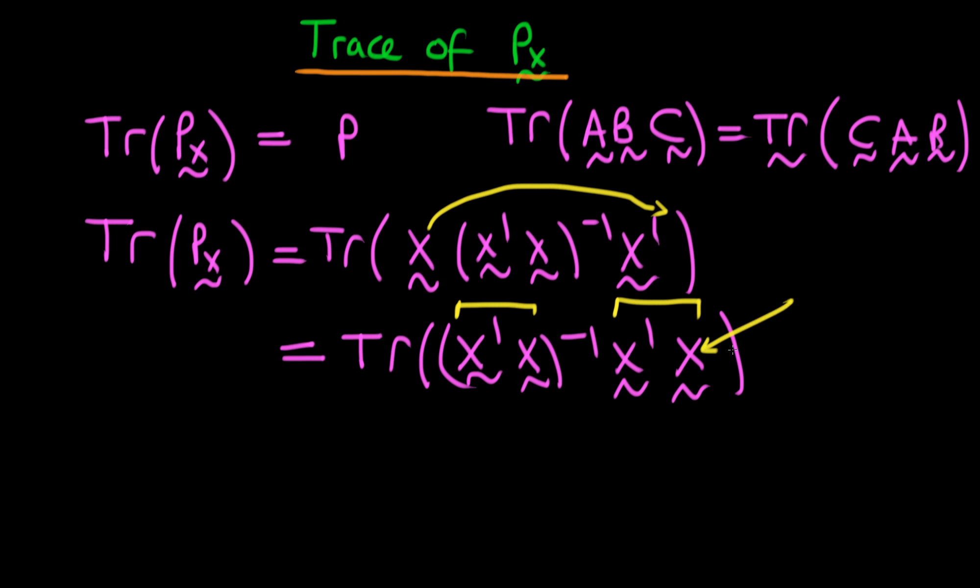Well, x has the dimensions n by p and x prime, therefore, has dimensions p by n. Meaning that this thing overall has dimensions p by p, which means that this whole thing is going to have dimensions p by p.